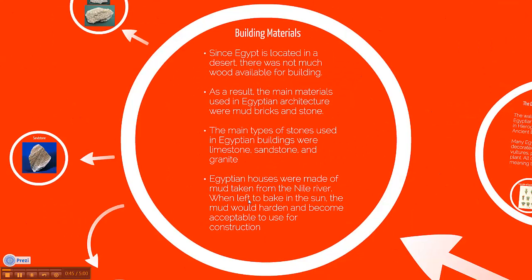Since Egypt is located in a desert, there is not much wood available for building. As a result, the main materials used in Egyptian architecture were mud bricks and stone. The main types of stones used in Egyptian buildings were limestone, sandstone, and granite. Egyptian houses were made of mud taken from the Nile River. When left to bake in the sun, the mud would harden and become acceptable to use for construction.